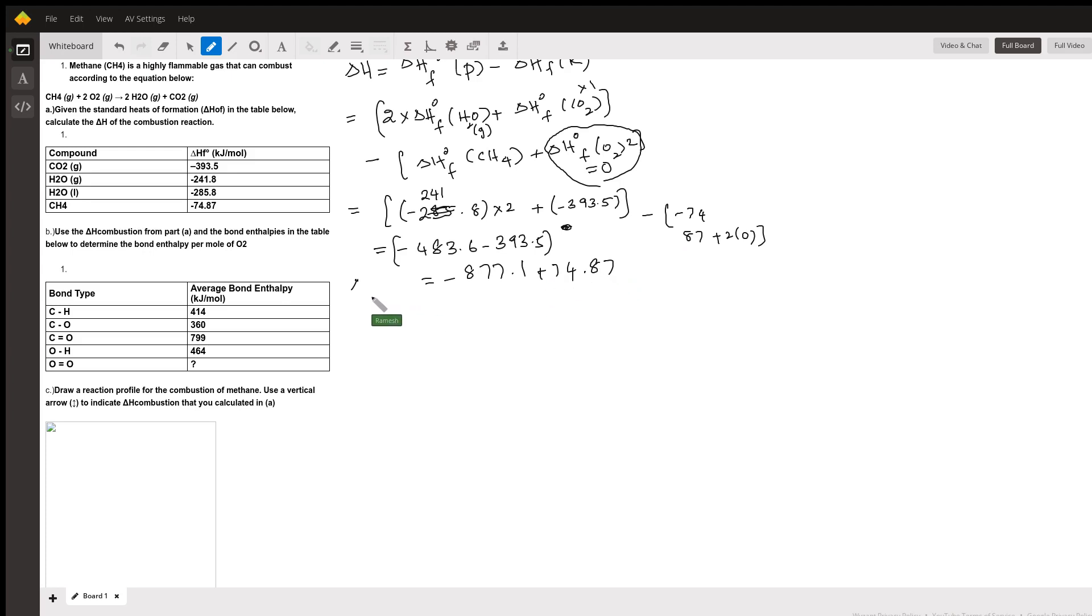So therefore, the enthalpy change for this reaction is 74.87 subtracted. It should give you approximately 802.23 kilojoules per mole. So that's the enthalpy change for the chemical reaction.